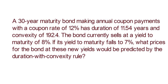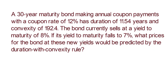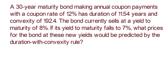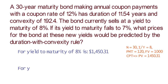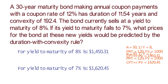Using a financial calculator, we can find the price of the bond. When yield to maturity is 8%, the bond price is $1,450.31. When yield to maturity is 7%, the price of the bond is $1,620.45.